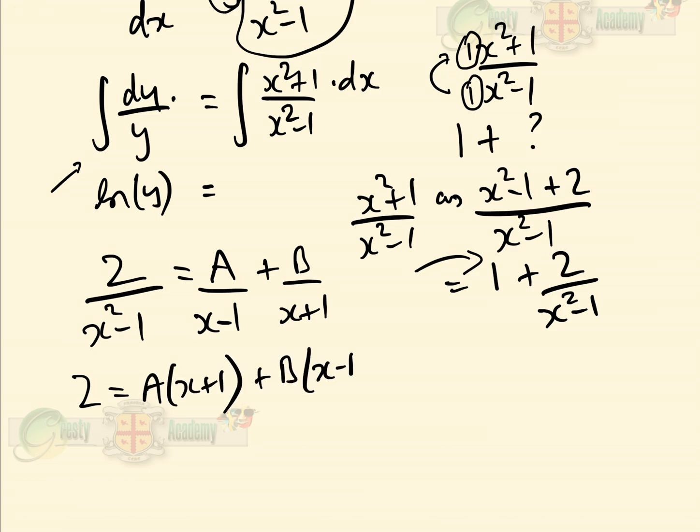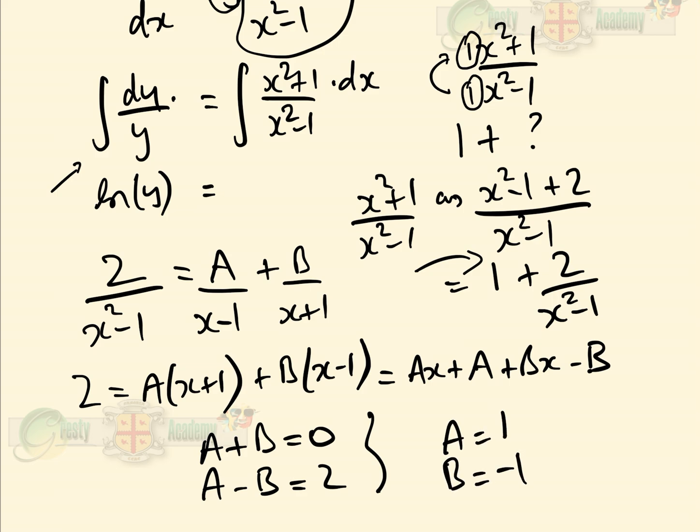Therefore we have that 2 equals A(x + 1) + B(x - 1), which equals Ax + A + Bx - B. Comparing coefficients of x, we get that A + B = 0, and comparing the constants, we get that A - B = 2. Solving that very simple simultaneous equation, we get that A = 1 and B = -1.